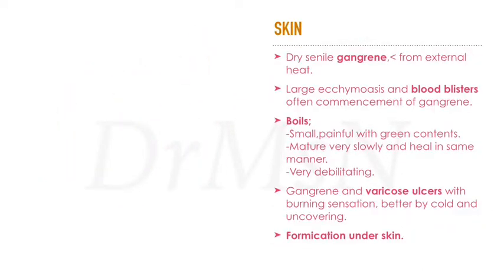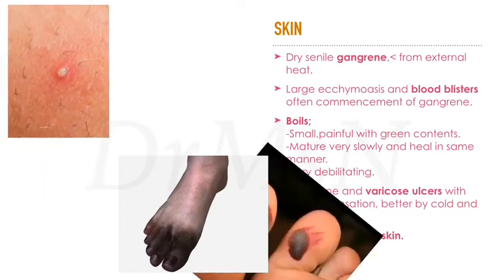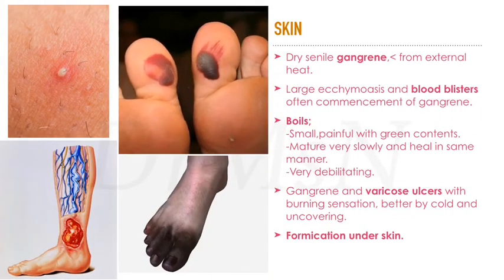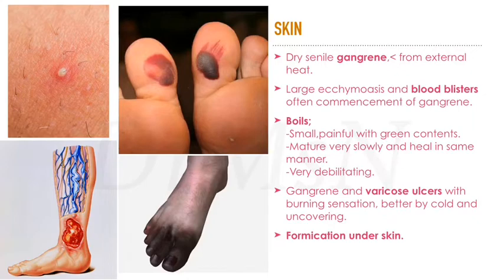Important clinical skin conditions are gangrene, blood blisters, boils, varicose ulcers, and formication under the skin. Ulcers and gangrenes are mainly senile and usually caused by insufficient blood supply due to degeneration of the walls of the small arteries. Initial stages of gangrene and ulcers are large ecchymosis and blood blisters. Boils are small, painful with green content — they mature and heal slowly. Varicose ulcers have burning sensation and are better by cold and uncovering. Secale is a three-mark remedy for formication under the skin.